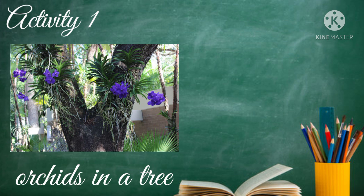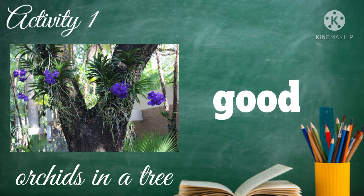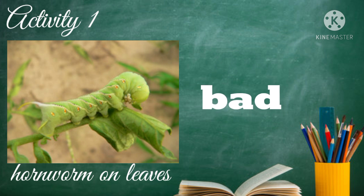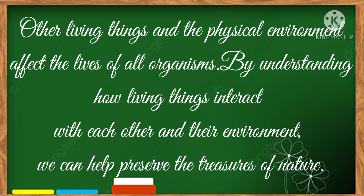Orchids growing in a tree make their own food and do not take anything from the tree — they give beauty to the environment without harming the tree. How about hornworm on leaves? A worm eats the leaves of a plant until the leaves are consumed and the plants die — this interaction is harmful to the environment. Other living things and the physical environment affect the lives of all organisms. By understanding how living things interact with each other and their environment, we can help preserve the treasure of nature.